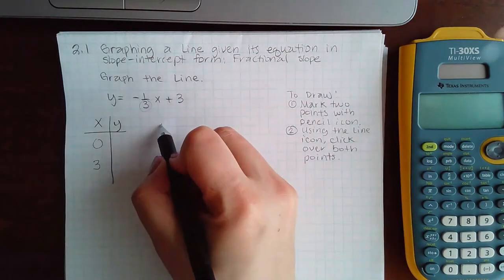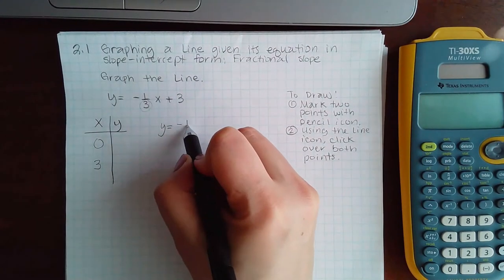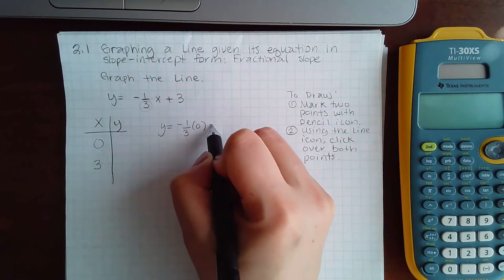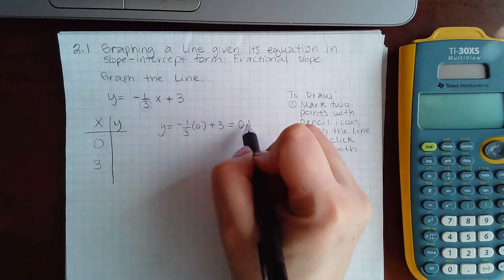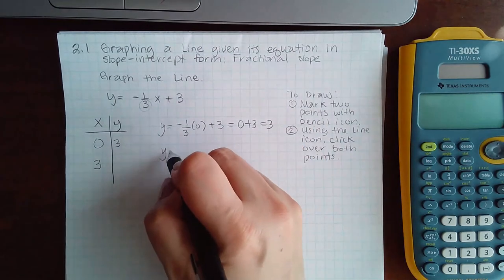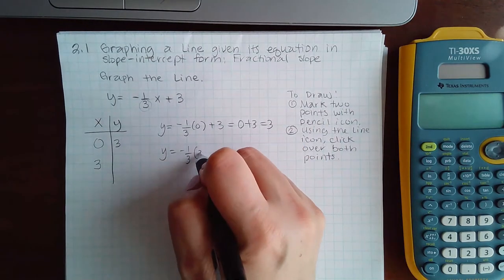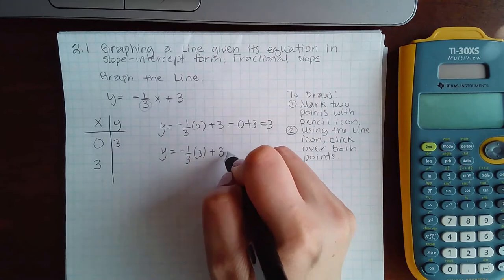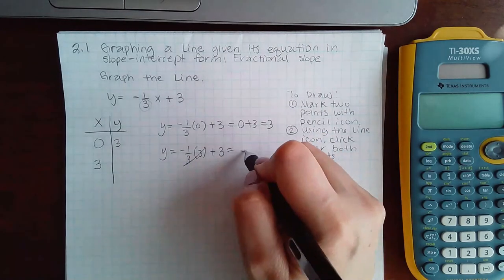I'm going to plug in y equals negative one-third times zero plus three, which is zero plus three, or three. Then I'm going to plug in negative one-third times three plus three, which equals negative one plus three, or positive two.